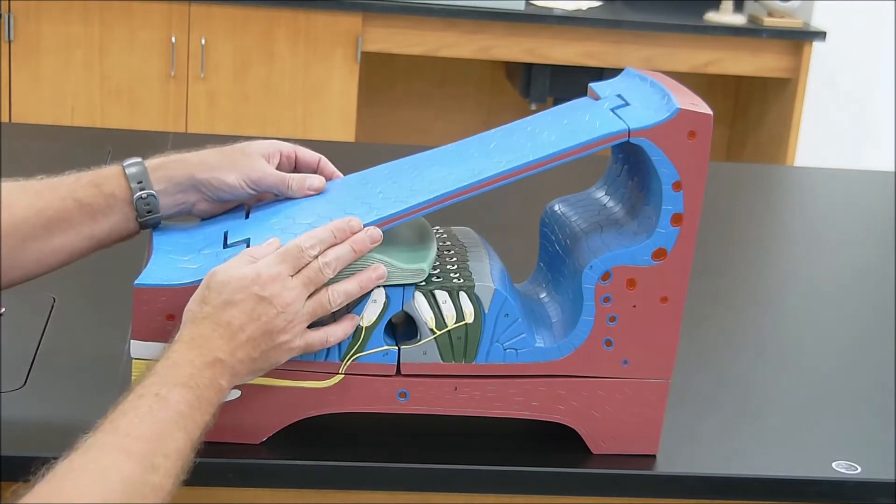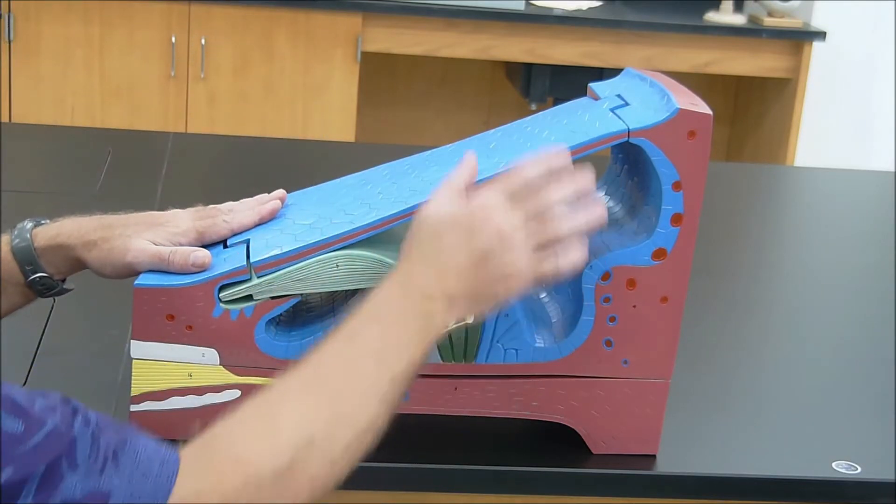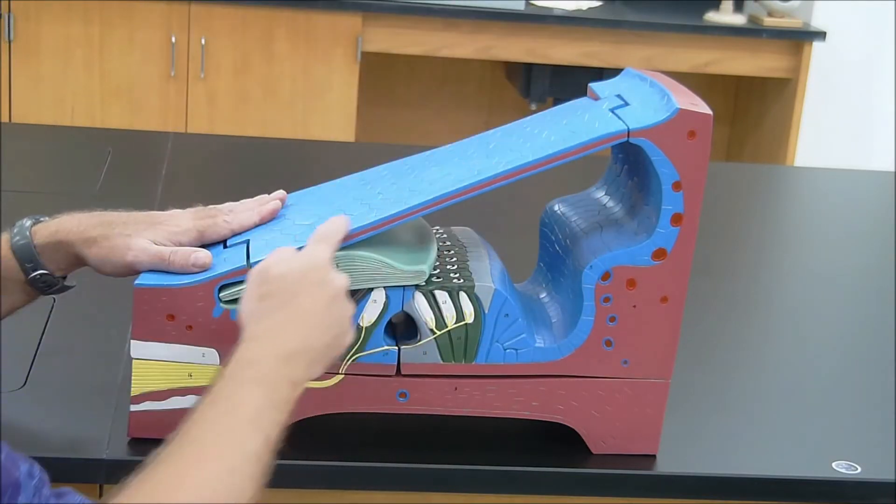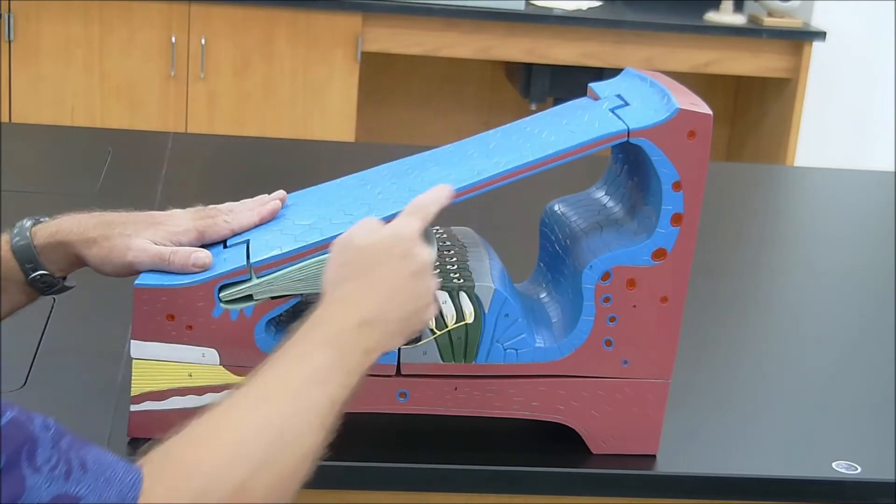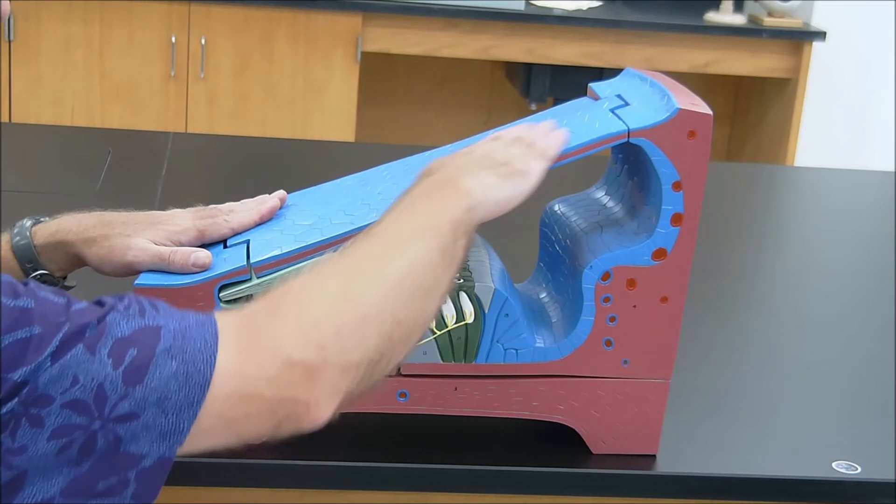So what you need to understand is there's actually three tubes that are going on here, one of which is complete. There would be a tube up here, and that tube would be called the scala vestibuli or vestibular duct, and below it we have the vestibular membrane right here.